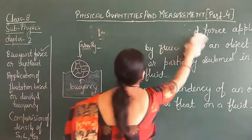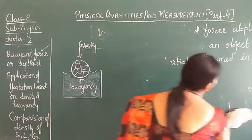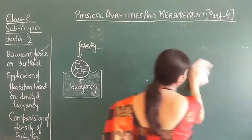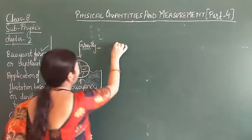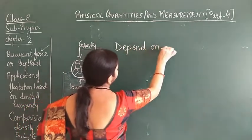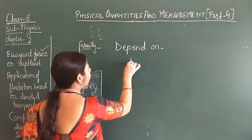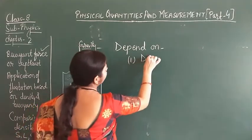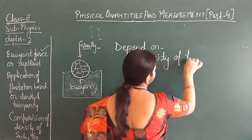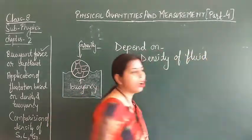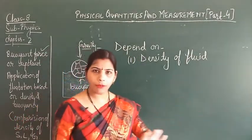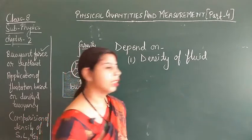So why does this buoyant force occur and what does it depend on? It depends on, first, the density of the fluid — which fluid the object is going to be submerged in. That means greater the density of the fluid, greater the upthrust.